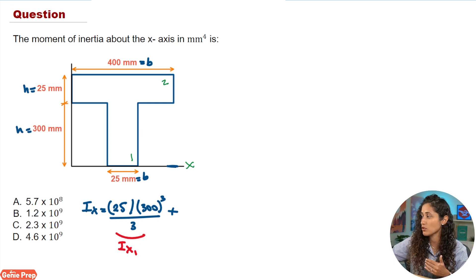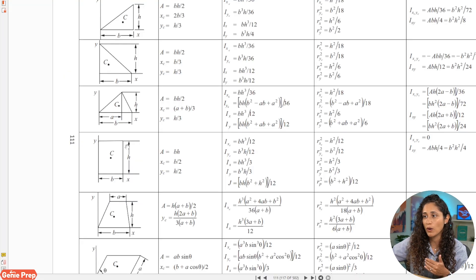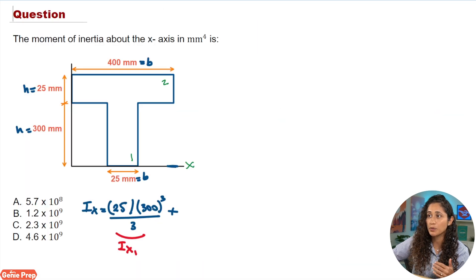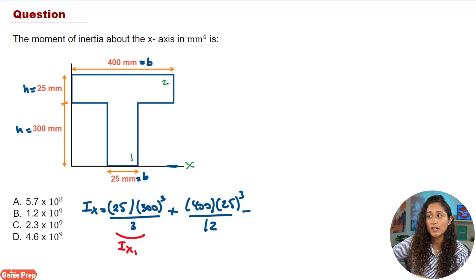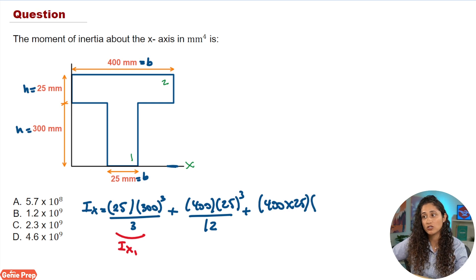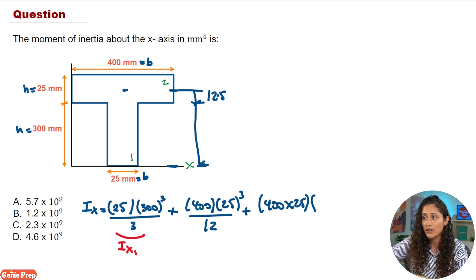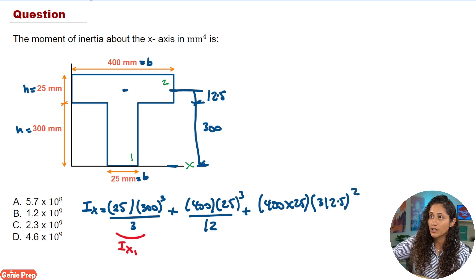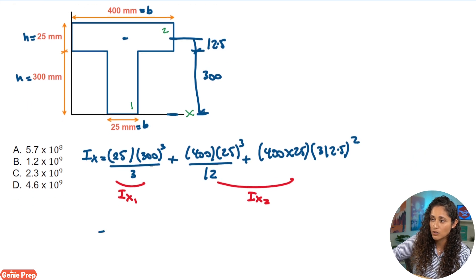For shape two we have IXC, and from the reference handbook IXC for a rectangle is BH³/12. Here B is 400 and H is 25, cubed and divided by 12. Then we add the area — 400 times 25 — times DY squared. DY is the distance from the X axis to the centroid of shape two: 12.5 plus 300 equals 312.5. Plugging these numbers in, you should get 1.2 times 10 to the power of 9 mm⁴, which corresponds to answer choice V.